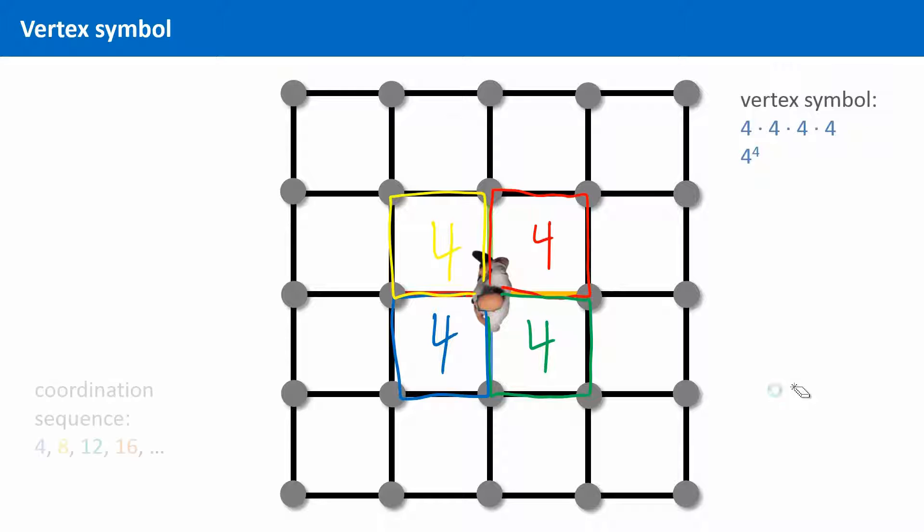The combination of coordination sequence and vertex symbol for each type of node can be used to identify nets in a more systematic way than just comparing it to well-known crystal structures.